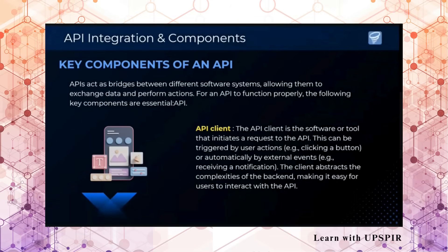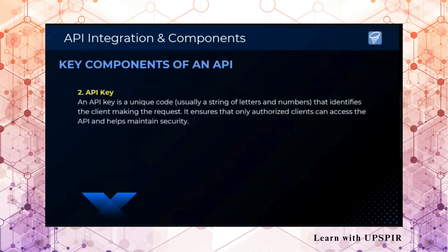Now talking about key components of an API. The first component is the API client — this can be a mobile app or a web page that is going to request information from the API. Then we have the API key, which is a unique code that identifies the client. If you have an API server and your APIs are public, it is not like everyone can call the API. There has to be a way for the server to confirm the request is coming from an authorized resource. For that we have API keys, which we generate by going to the API server's website.